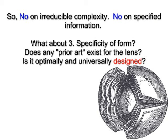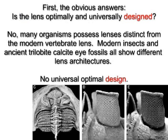No on specified information. What about specificity of forms? Is there any sort of prior art that exists for the lens? Is it optimally and universally designed? Well, no. Many organisms possess lenses distinct from the modern vertebrate lens.